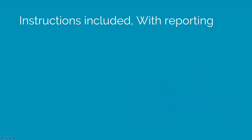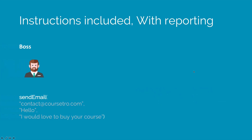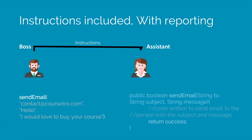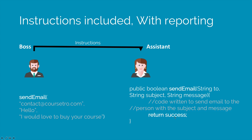So that brings us to the final part where everything is combined. The boss sends an email with whatever details. The assistant is modified to handle those instructions from the boss and has a reporting status at the end as well, that says return success if the email was sent successfully. Success is true when everything is good and false otherwise. The boss can store this value inside a variable called outcome of type boolean and track how many emails were successful and how many were unsuccessful.